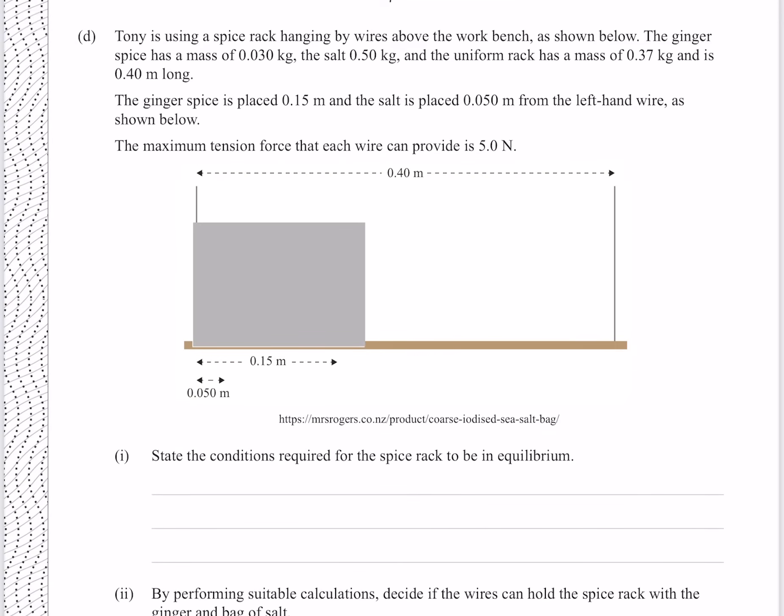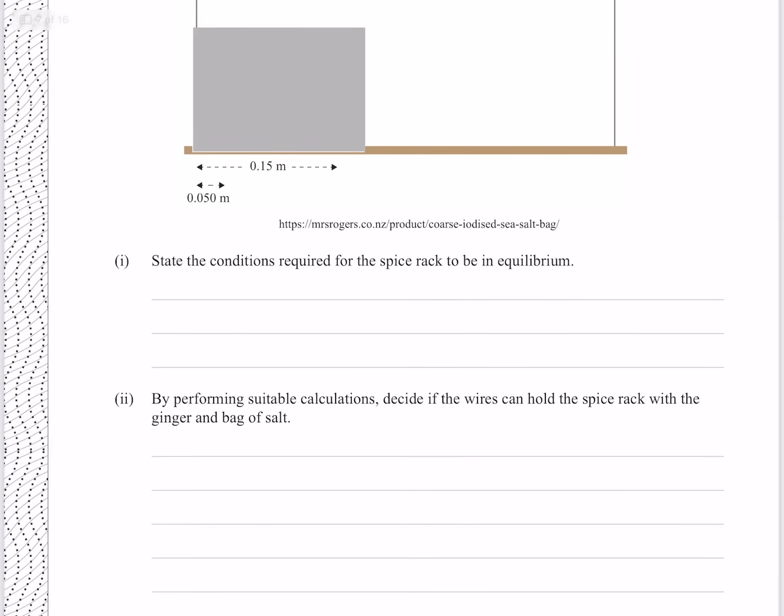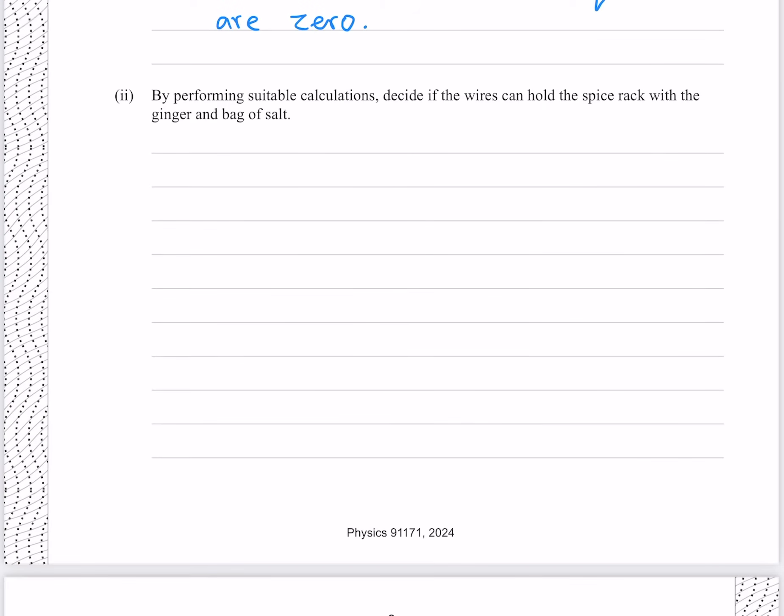Tony is using a spice rack hanging by wires above the workbench as shown below. The ginger spice has a mass of 0.03 kg, the salt 0.5 kg, and the uniform rack has a mass of 0.37 kg, and is 0.4 meters long. The ginger spice is placed 0.15 meters, and the salt is placed 0.05 meters from the left-hand wire, as shown below. The maximum tension force that each wire can provide is 5 newtons. State the conditions required for the spice rack to be in equilibrium, that is that the net force and net torque are 0.